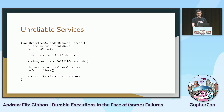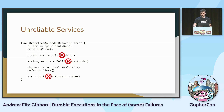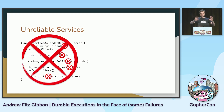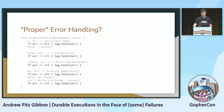The problem with this, of course, is that things are unreliable. The creating the order can fail, the fulfilling the order can fail, archiving it can fail, creating the API call can fail — basically the entire thing can fail. So naturally, we add some error handling.